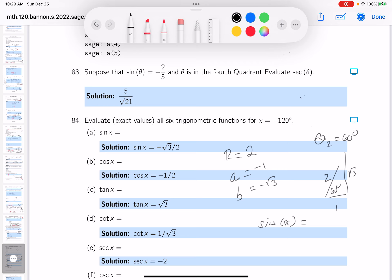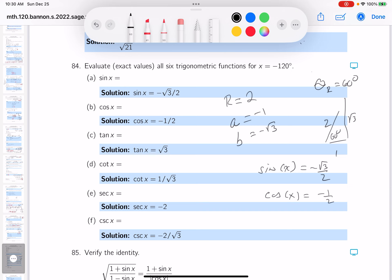What do you get over here? It's going to be minus root 3 over 2. The cosine of X is going to be minus 1 over 2. The tangent of X is going to be minus root 3 over minus 1, which is just root 3.